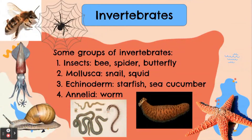Now let's learn about invertebrates. Some groups of invertebrates are: 1. Insects. The examples of insects are bee, spider, and butterfly. 2. Mollusca. The examples of mollusca are snail and squid.